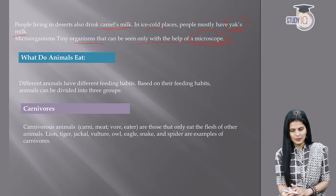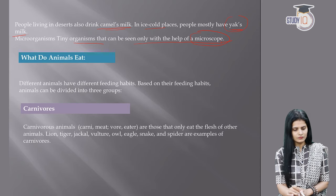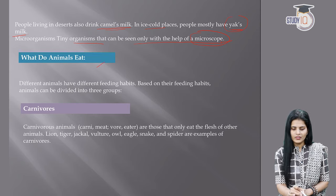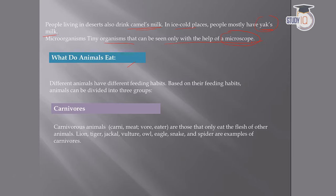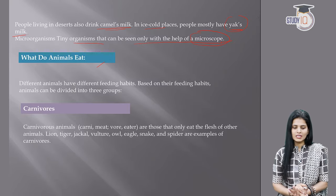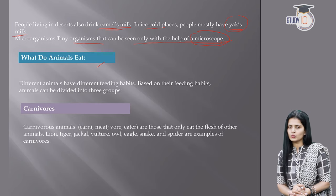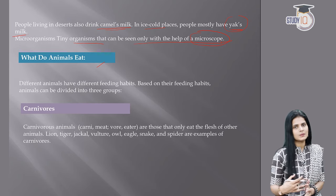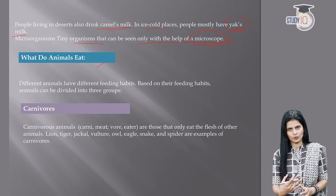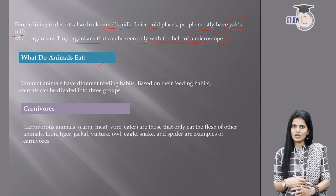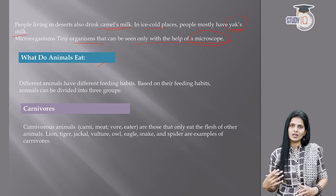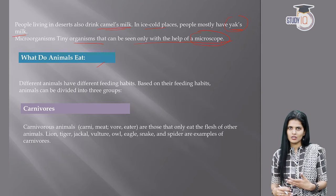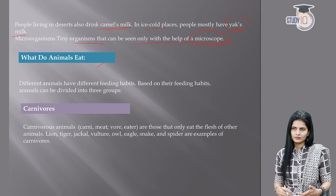Next topic: what do animals eat? Different animals have different feeding habits. Based on their feeding habits, animals can be divided into three groups: herbivorous, carnivorous, and omnivorous. Human beings are also included as social animals. Animals are categorized based on their eating habits.